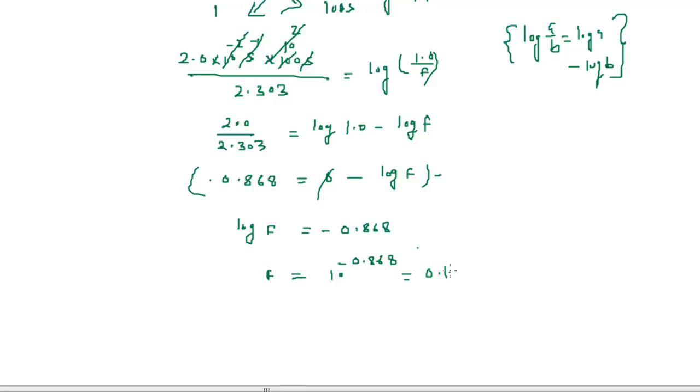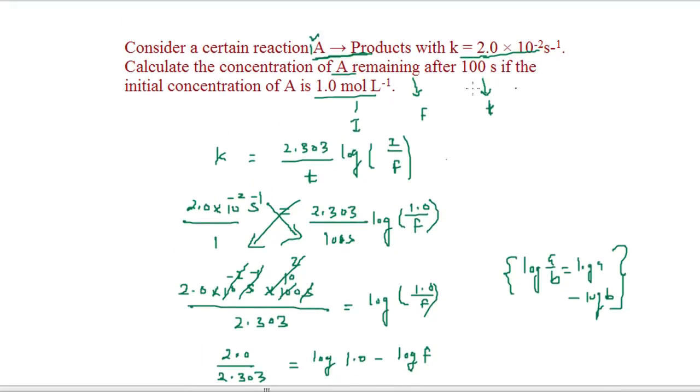F equals 0.135. This is the final amount, the remaining amount of the reactant after 100 seconds. You can see how we have been able to calculate the remaining amount of the reactant by using the formula for the first-order reaction.